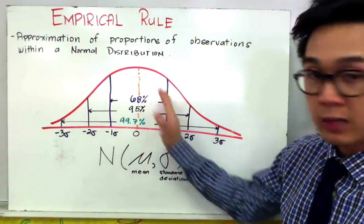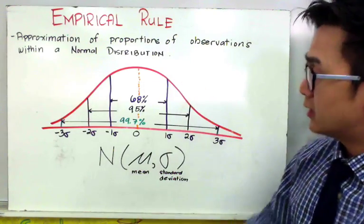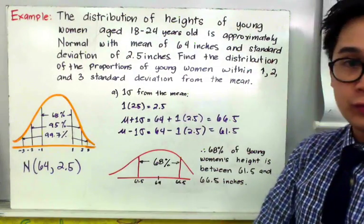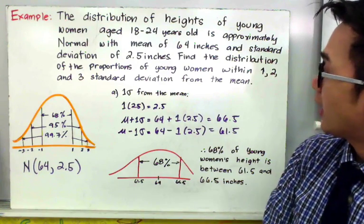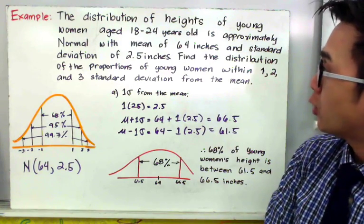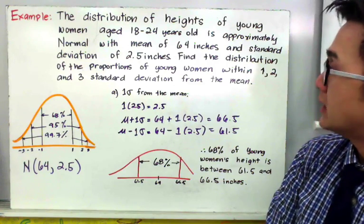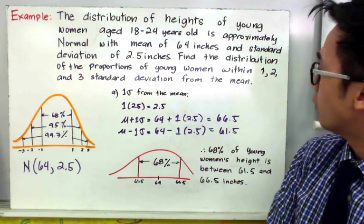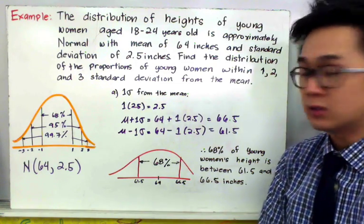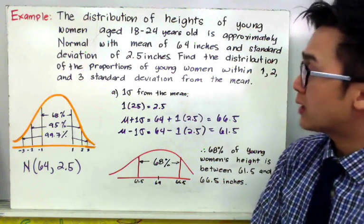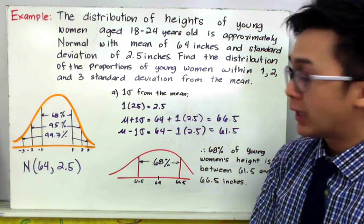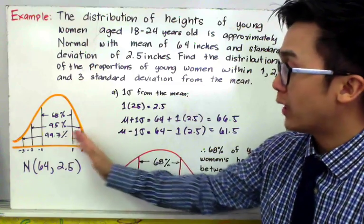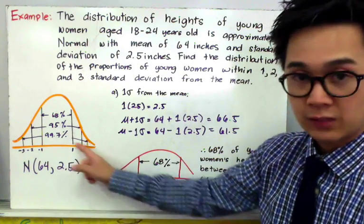This particular rule only applies for a normally distributed distribution or a bell-shaped curve. In our first example, the distribution of heights of young women aged 18 to 24 years old is approximately normal with a mean of 64 inches and standard deviation of 2.5 inches. We will find the range of values that fall within one, two, and three standard deviations from the mean.